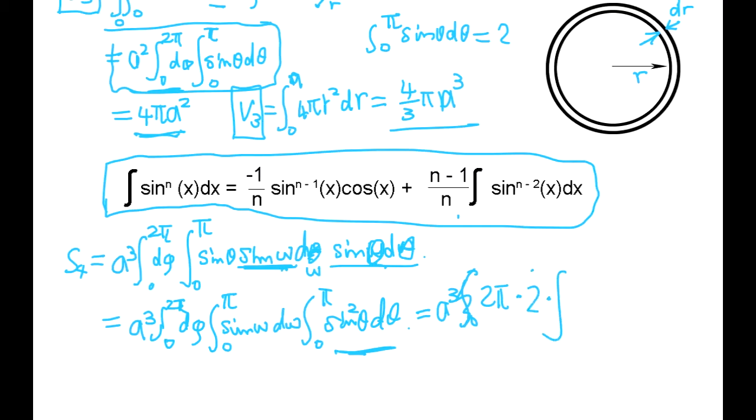When n is 2, then it's going to be 2π. And this we know is going to be 2. And the last integral will be 2/1, 0 to π, 1 dx, and that's going to be π. So it's going to be 2π² A³. That's going to be the surface of fourth dimension.